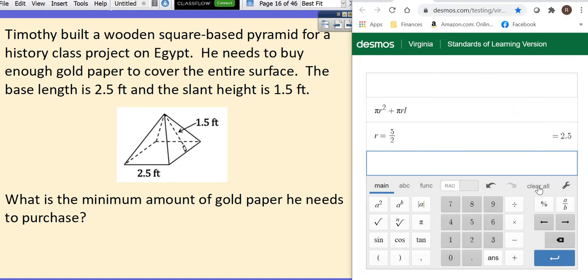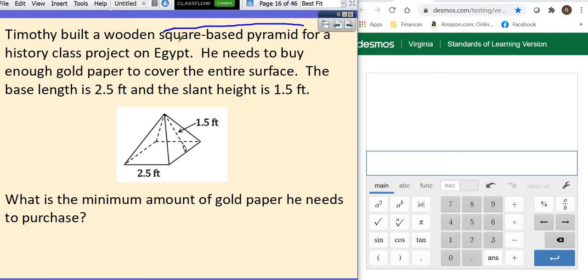This says Timothy built a wooden square-based pyramid for a history class on Egypt. He needs to buy enough gold paper to cover it. So yes, this is definitely surface area. So we have to find surface area of a square-based pyramid. What's the minimum amount of gold paper he needs to purchase?